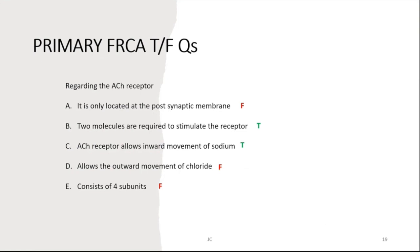True/false questions to wrap up. Regarding the acetylcholine receptor: A) It is only located in the post-synaptic membrane — False. B) Two molecules are required to stimulate the receptor — True. C) The acetylcholine receptor allows inward movement of sodium — True (it allows inward sodium, not outward chloride). D) It consists of four subunits — False, it has five subunits.